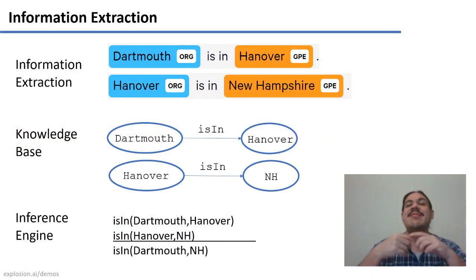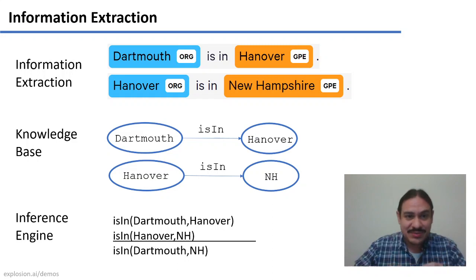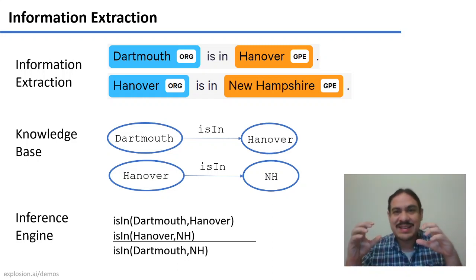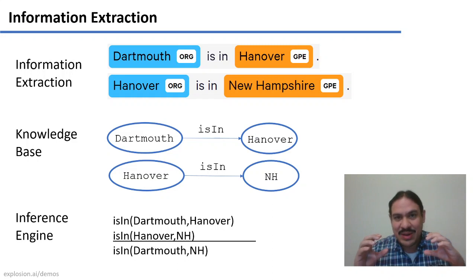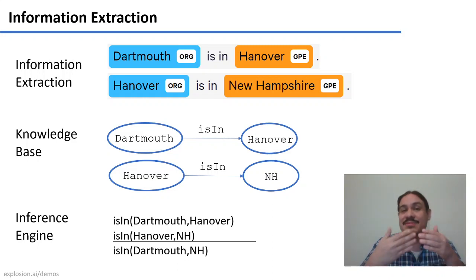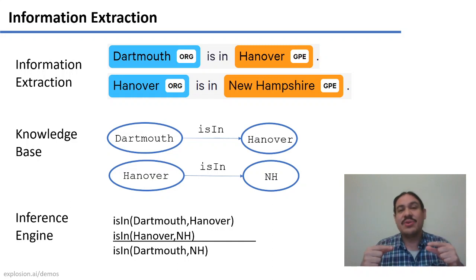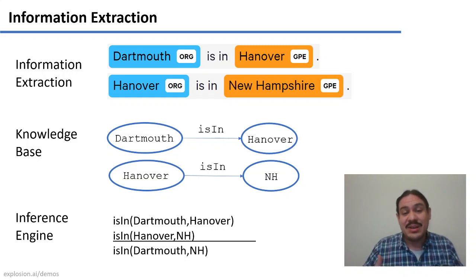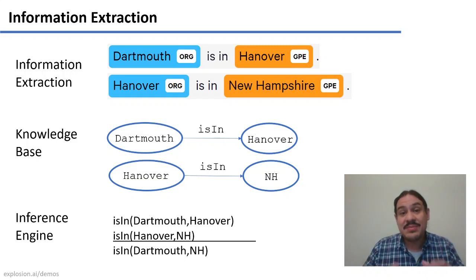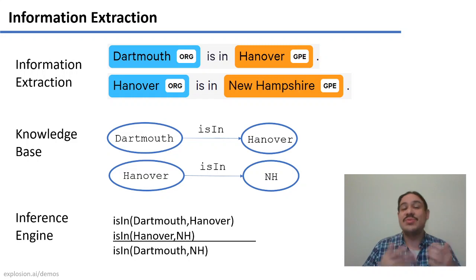What we have been talking about so far is knowledge bases that have facts about the world in them — some kind of information. For example, that Dartmouth is in Hanover and that Hanover is in New Hampshire. These systems have this knowledge formatted in some way, and then they have inference engines that can take these facts and convert them into new facts so that they can, for example, answer a question like: is Dartmouth in New Hampshire? According to the system, yes, because you can derive it from the entities and the relationships that we have in this little knowledge base, which is formatted like a knowledge graph.